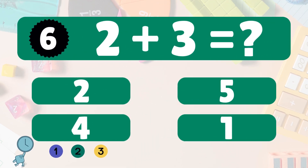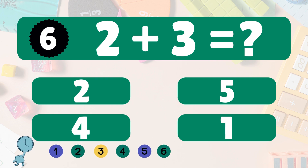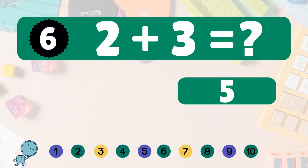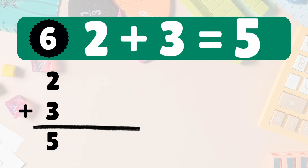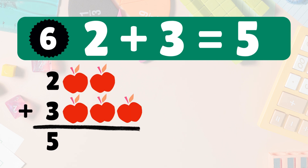2 plus 3 equals what? 2 plus 3 is 5. Here we have 2 apples. Let's add 3 more apples. Now we have 1, 2, 3, 4, 5. So 2 plus 3 is 5. Great job. Next.